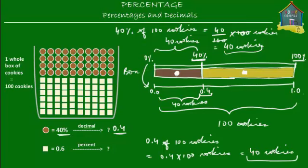So all you do to convert from percentage to decimal is divide it by 100. Now how about the opposite? What do you do if you have to convert from decimal to percentage? Let's see how to find that out.